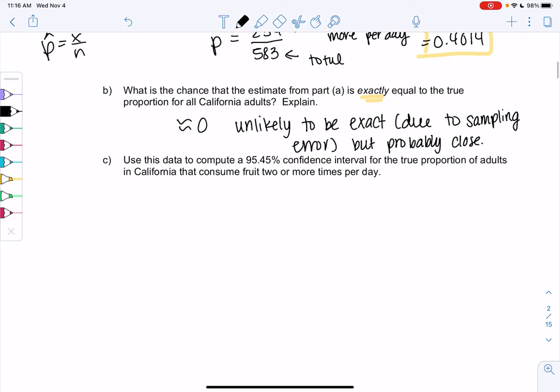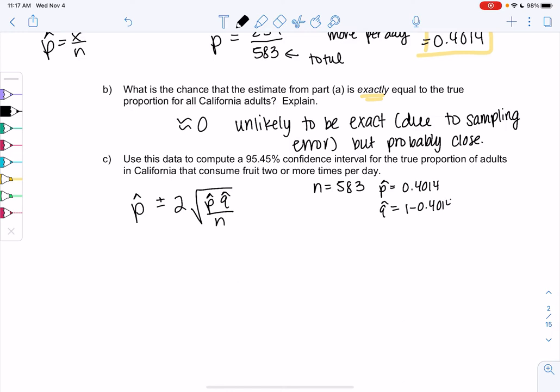Let's actually find a confidence interval. So the formula was p hat plus or minus 2 times the square root of p hat q hat over n, which was coming from expected range. We want to find a 95.45% confidence interval for the true proportion of adults that consume fruit two or more times per day. Before we plug in, let's identify n, p hat, and q hat. So n was the total, which was 583. p hat was 0.4014. And then q hat is 1 minus p. So 1 minus 0.4014 and you should get 0.5986.